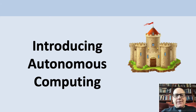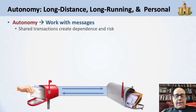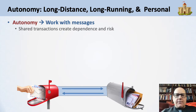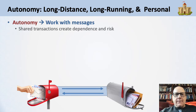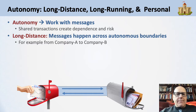Let's introduce autonomous computing. Autonomy is long-distance, long-running, and personal. Autonomy means working with messages, because shared transactions create dependence and risk — that is not autonomous, that's dependent. Long-distance, because messages happen across these boundaries — what does it mean to work across independent and autonomous boundaries? An example is company A to company B, so it is, in fact, long-distance work.